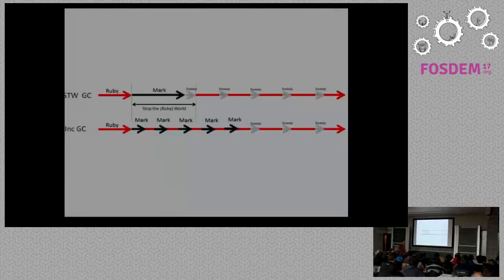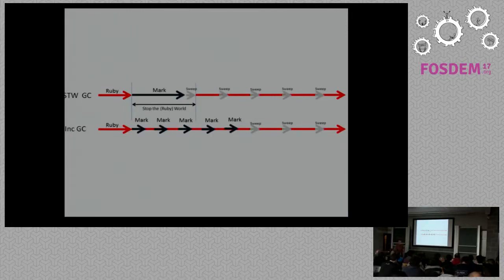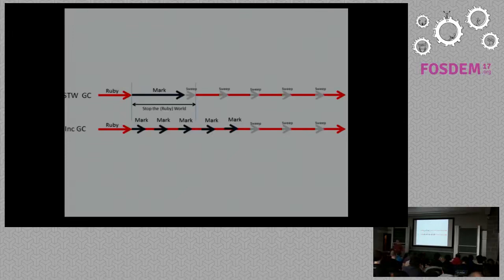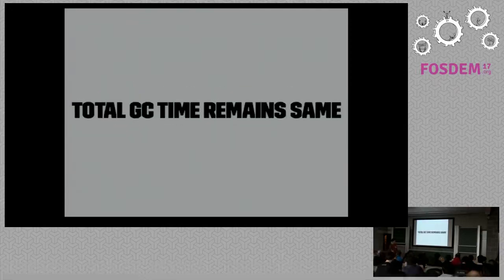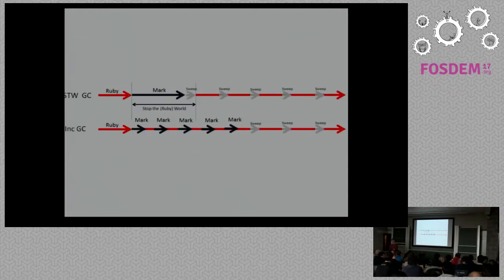Incremental GC is again a Koichi project. The whole idea is to break up the mark phase into shorter bits so we can execute Ruby during the pauses in marking. Total GC time will remain the same — the idea wasn't to make GC time quicker, just to reduce the amount of time we spend in these long pauses.